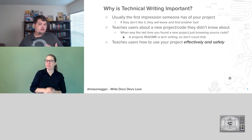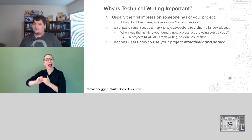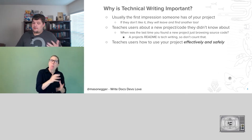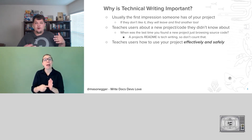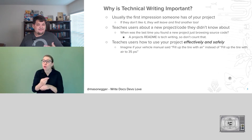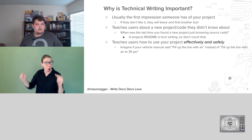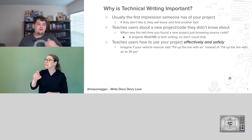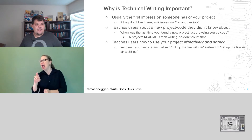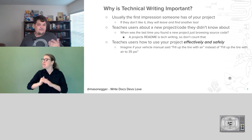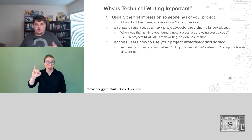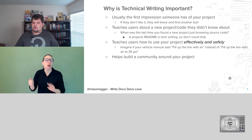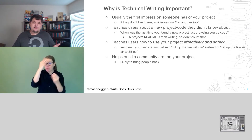It teaches users how to use your project effectively and safely, and this is very important. There are people who work on technologies where an improper use of a library or tool can result in bodily harm. Imagine if you wrote a vehicle manual that said 'fill up the tire with air' instead of 'fill up the tire with air to 35 pounds per square inch or PSI.' That exclusion could cause someone to overfill the tire, cause it to rupture, and potentially harm themselves. Being able to effectively and safely guide your users is extremely important, and it helps build communities around your projects.